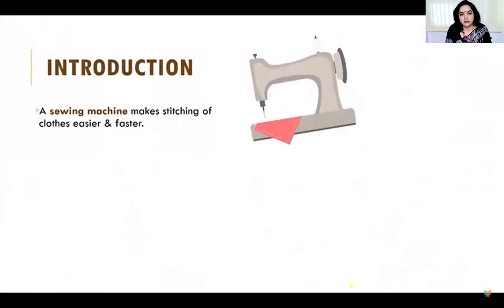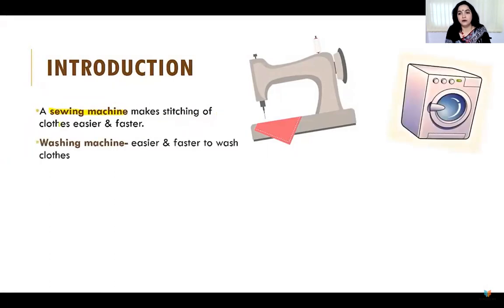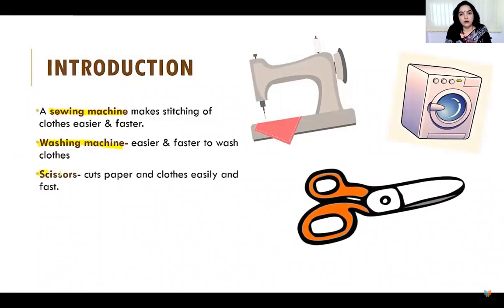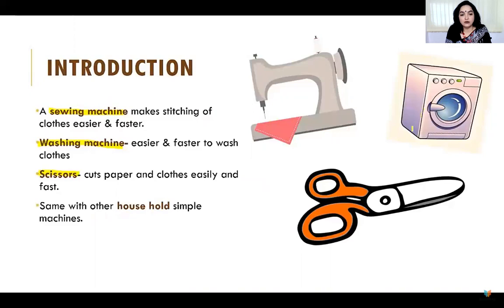First of all we'll talk about machines. Machines are basically anything, like a sewing machine, which makes stretching of clothes easier and faster. You can take an example of a washing machine also — it makes our work easier and faster to wash the clothes. We can take one more example: in our daily needs we use scissors to cut papers and clothes easily and very fast. Same with other household simple machines.